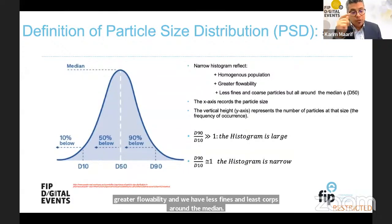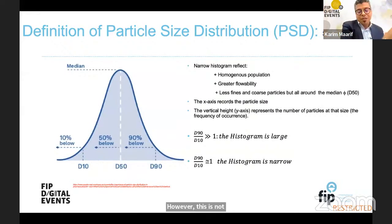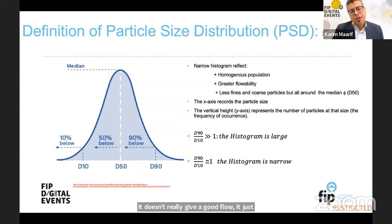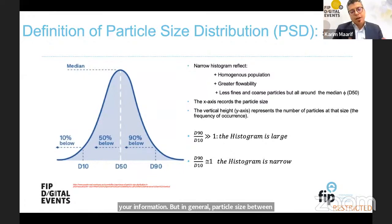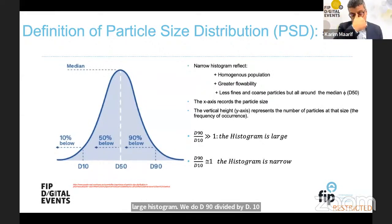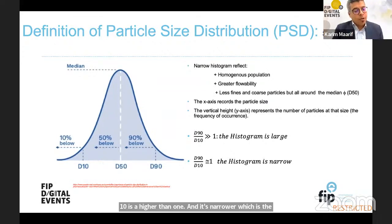This is not a universal rule — if we take a very fine particle below 50 micrometers and have a narrow histogram, it doesn't really give good flowability. In general, particle sizes between 50 micrometers and 1,200 micrometers can present good flowability, especially when the histogram is narrow. We call it a large histogram when D90 divided by D10 is higher than 1, and narrower — the best situation a formulator is looking for — when D90 divided by D10 is around 1.